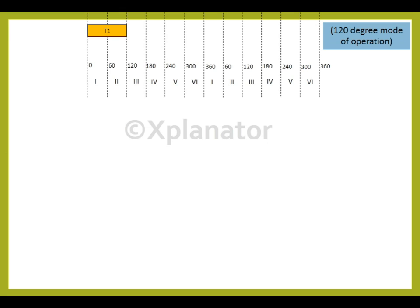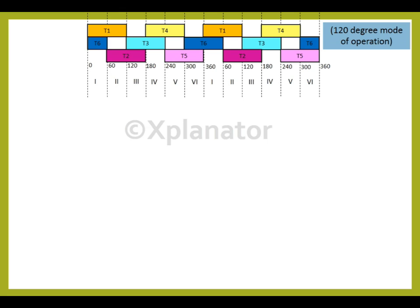Starting with thyristor T1 which fires at omega t equals 0 and conducts till omega t equals 120. While T1 is conducting at omega t equals 60, T2 fires and remains ON till 180 degrees. The pattern continues for thyristor T3, 4, 5 and 6. The sequence is continued for another cycle of 360 degrees.